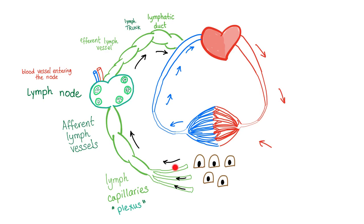This fluid is picked up by the lymphatic capillaries or plexus. Then we have the afferent lymph vessels, good old lymph nodes with germinal centers, then the efferent lymph vessels, lymph trunk and lymph duct, back to the big veins and back to the circulation.